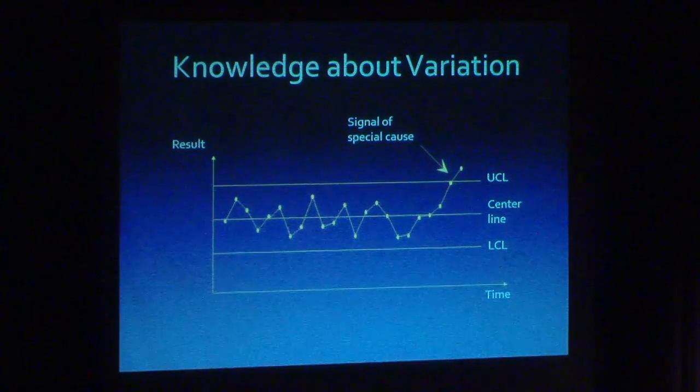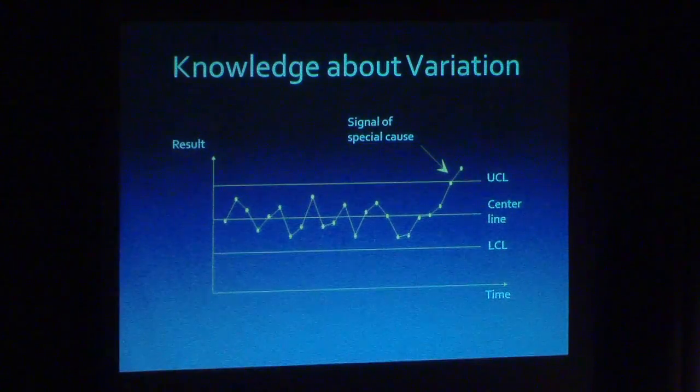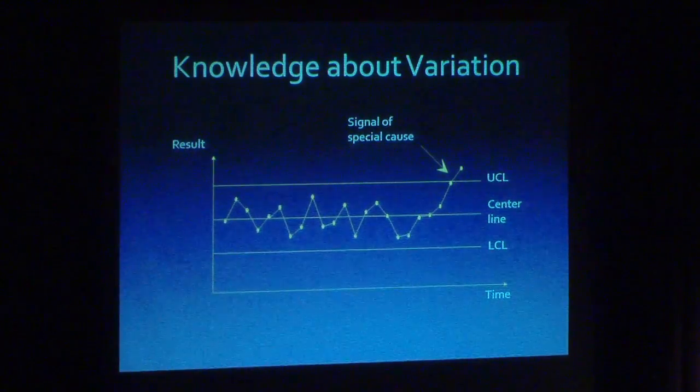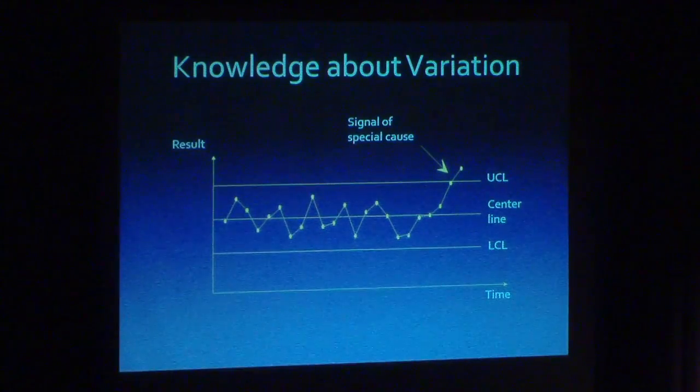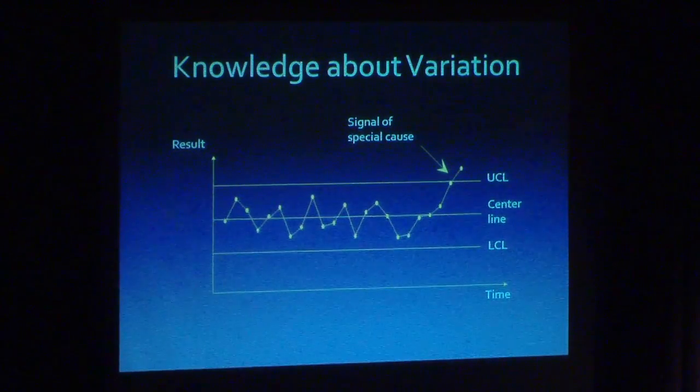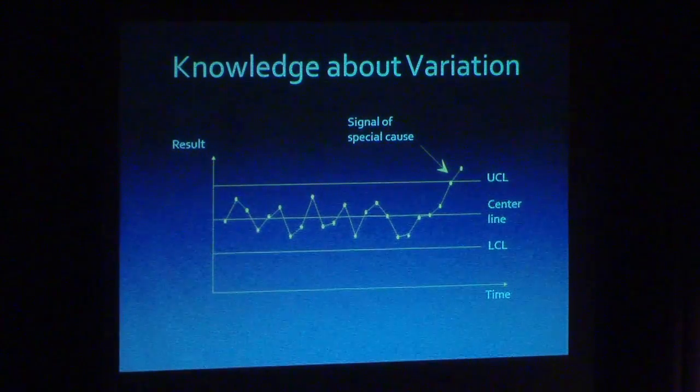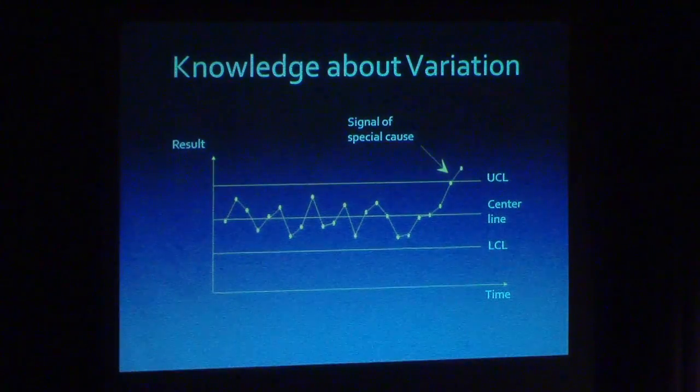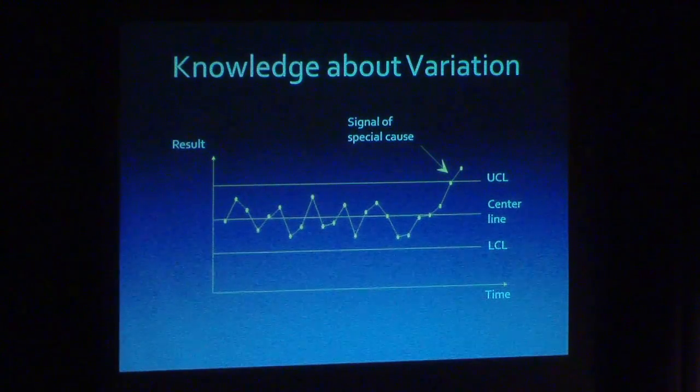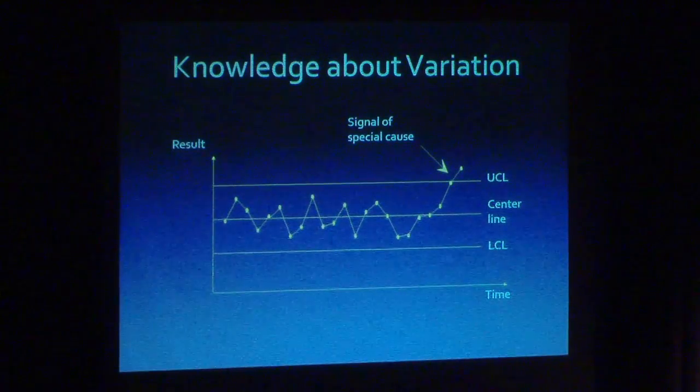As we see in this particular run of data here, this last point went outside the control limits, so it is a signal of special cause. For that particular point, it makes sense to ask the question, 'What was special? What was different about the conditions underlying the generation of this point of data versus the others?'